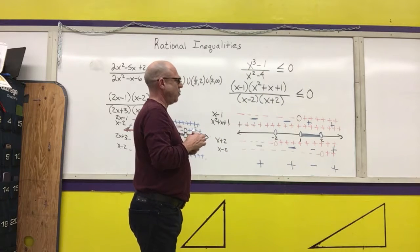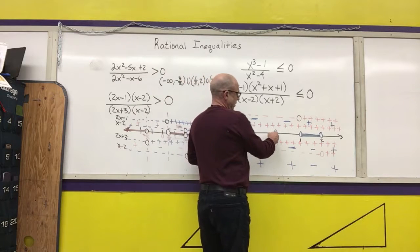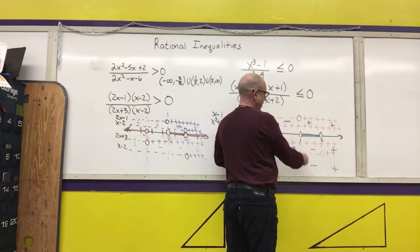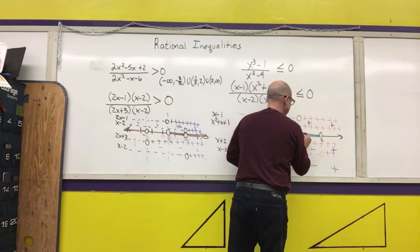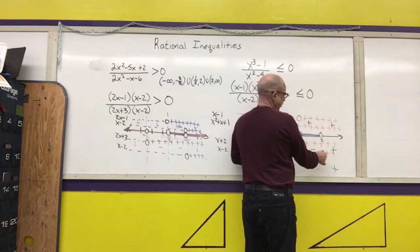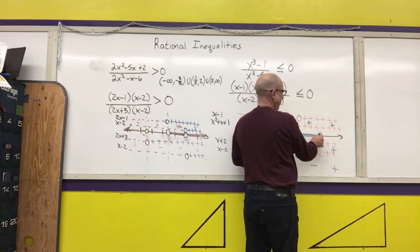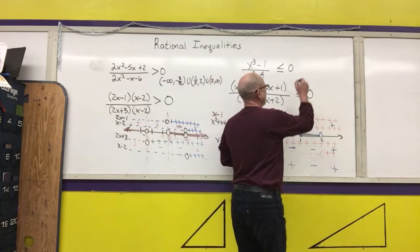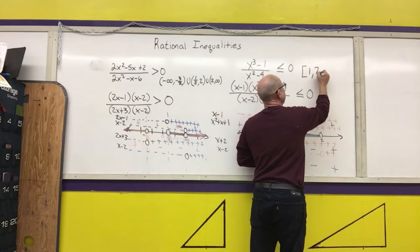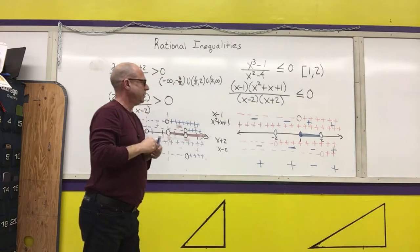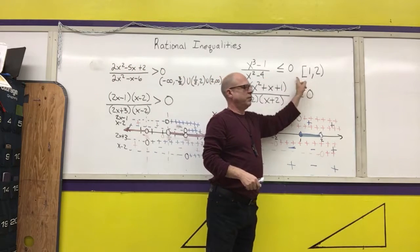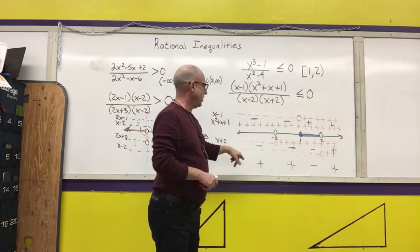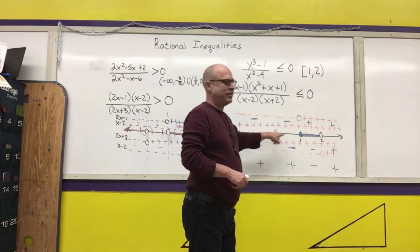Now I need to check the endpoints of my intervals. At negative two, I'd be dividing by zero, so I will never fill in that dot. If I put x equals 1 in, I get zero — is zero less than or equal to zero? Yes. So that endpoint gets filled in. If I put in x equals 2, I get an undefined solution, so I will not fill in that zero. The only interval where my graph is less than or equal to zero is the closed interval starting at one with two open on that side.